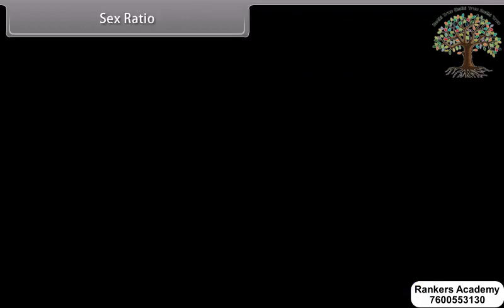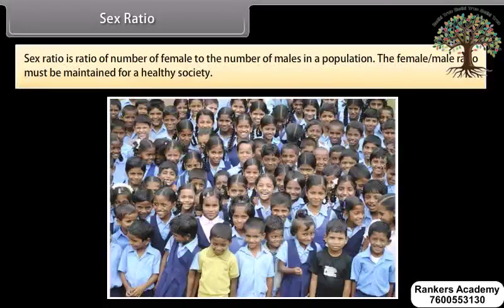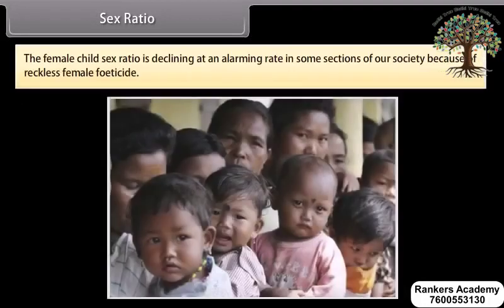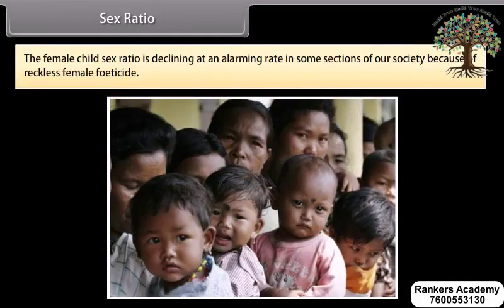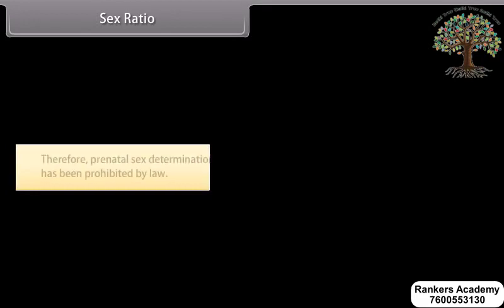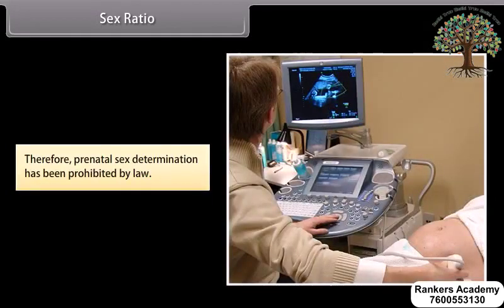Sex ratio is the ratio of the number of females to the number of males in a population. The female-male ratio must be maintained for a healthy society. The female child sex ratio is declining at an alarming rate in some sections of our society because of reckless female feticide. Therefore, prenatal sex determination has been prohibited by law.